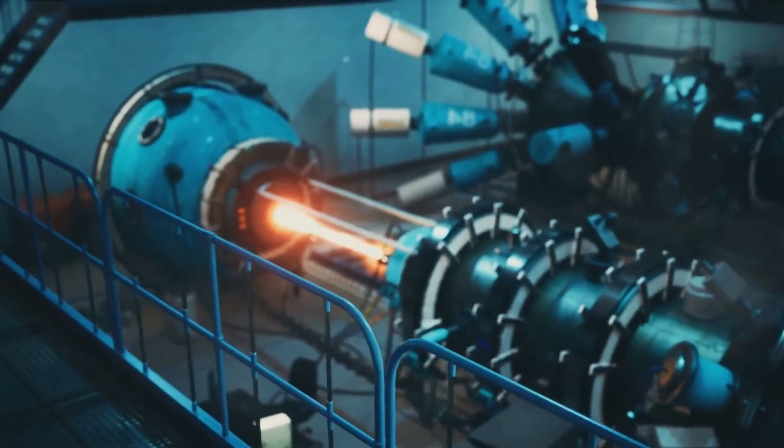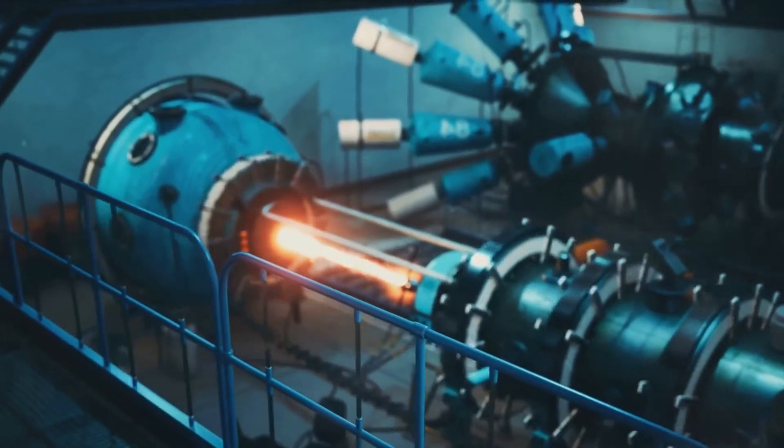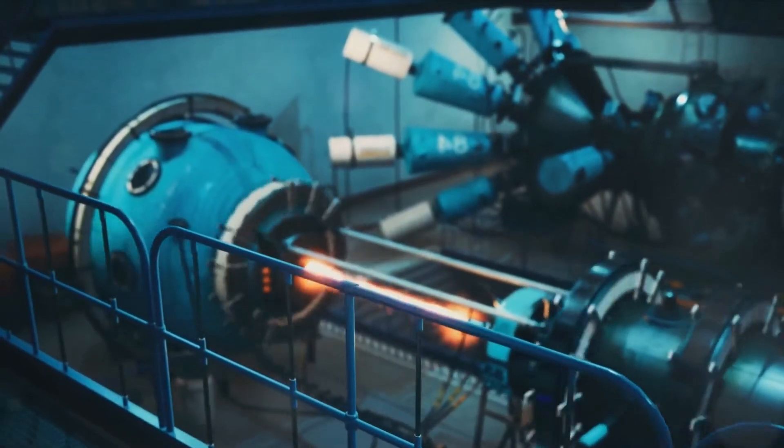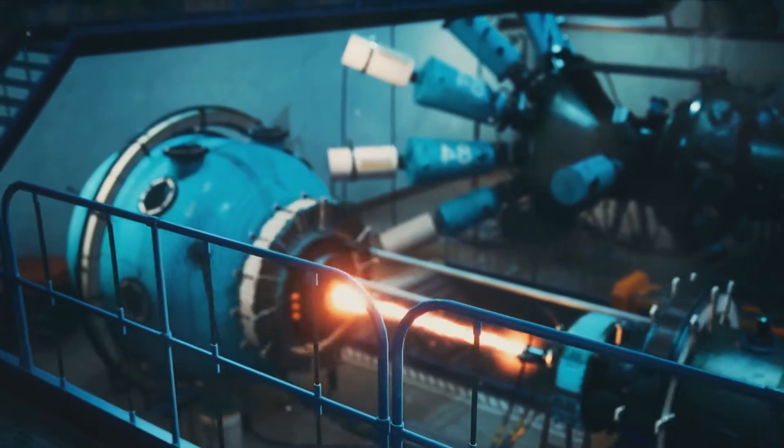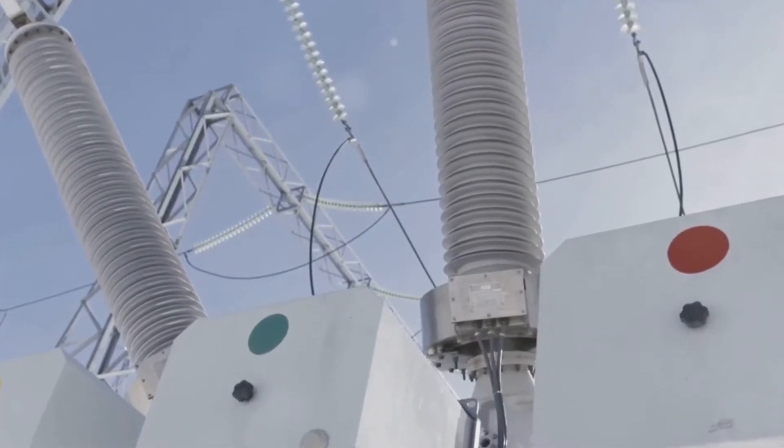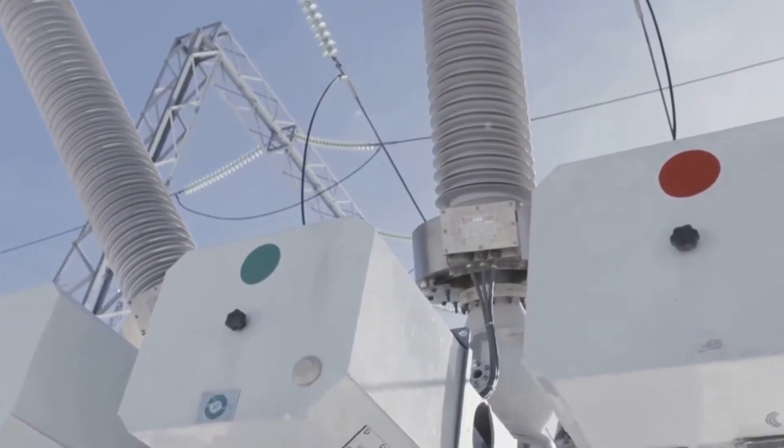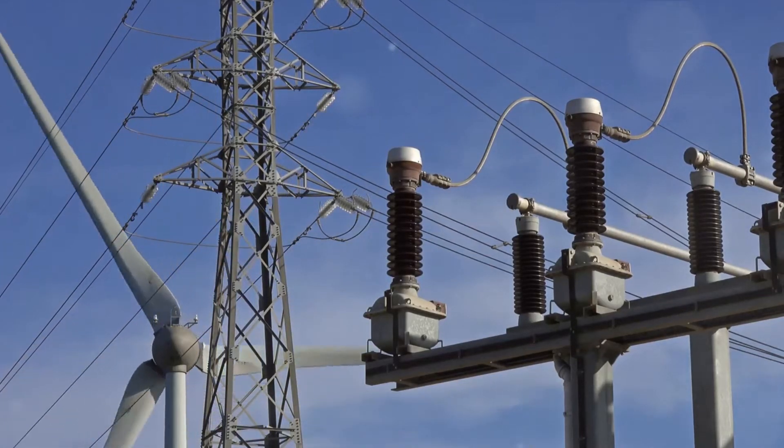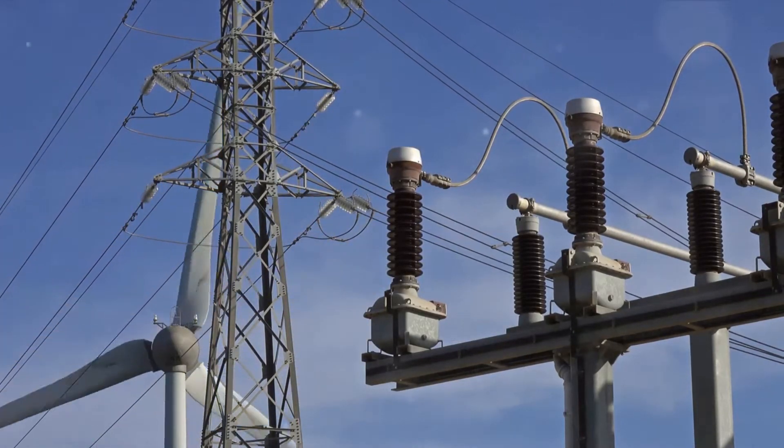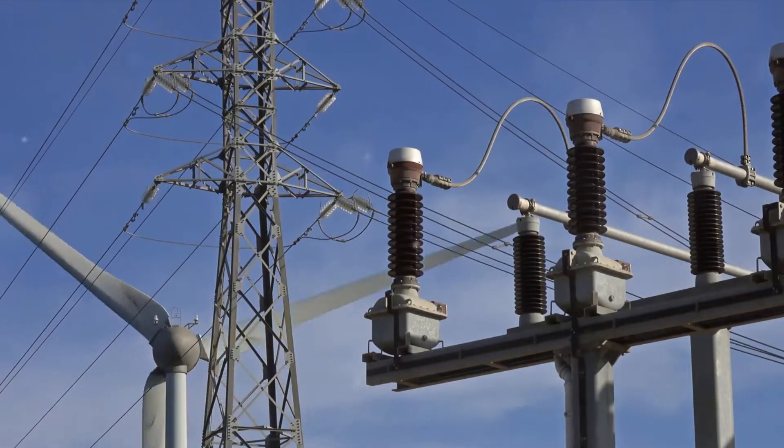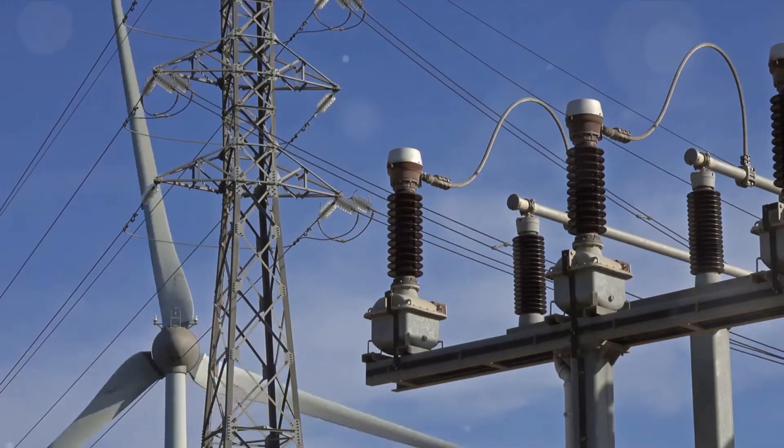Moving on, we have synchronous condensers. These are essentially motor generators. When they spin, they can either absorb or generate reactive power as needed. This is a bit like a cruise control for your power system. By adjusting the speed of the synchronous condenser, engineers can finely control the amount of reactive power in the system, helping to stabilize the power factor.